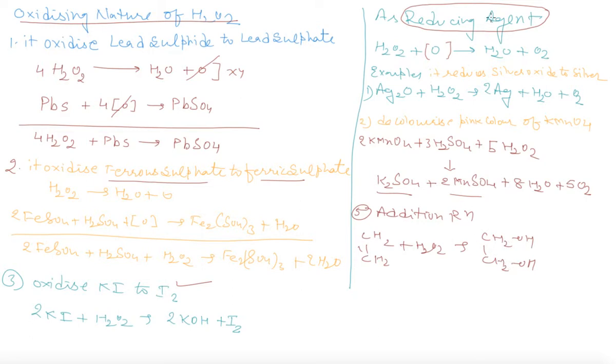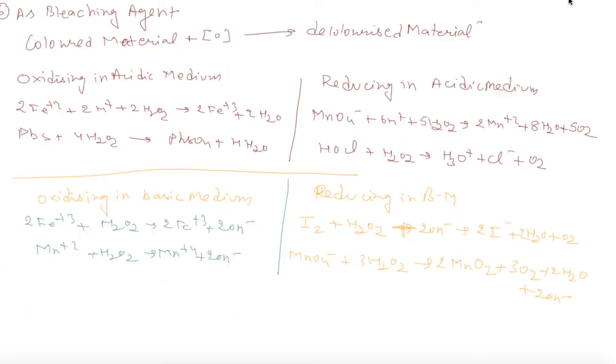Next, it is acting as a bleaching agent. Any colored material reacts with oxygen given by hydrogen peroxide and converts into decolorized material.